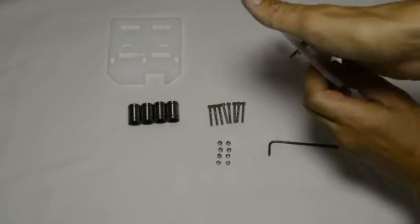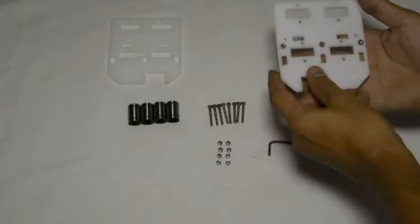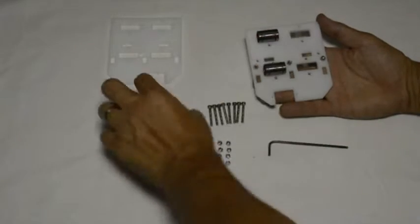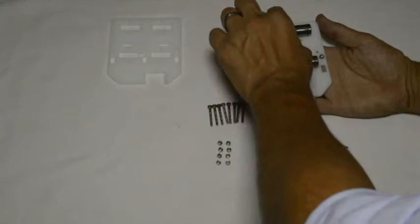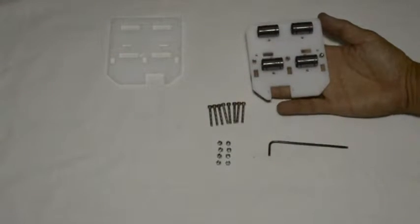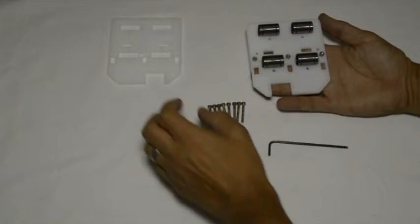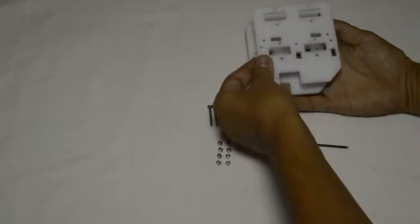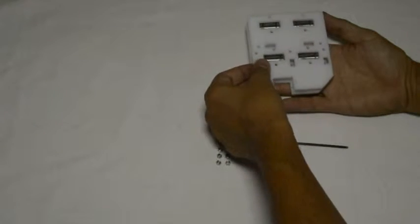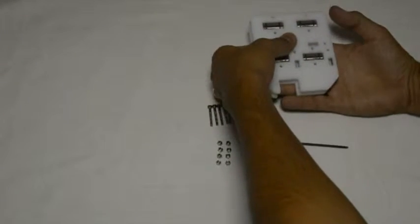Now we will turn this around and we will put the linear bearings in place so that they sit nicely in those four slots provided. Then this one we'll put on top so it's in the same orientation as the bottom one.